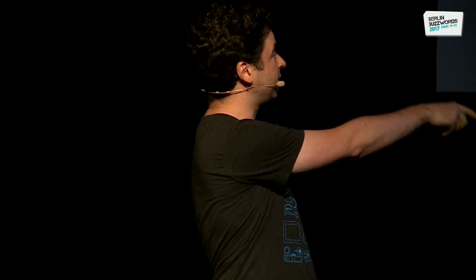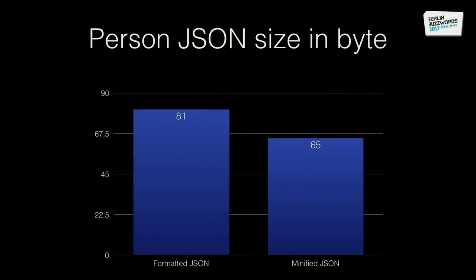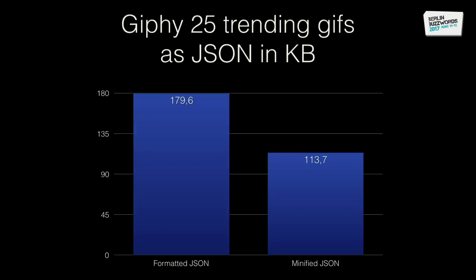If you look at this: minified JSON is 65 bytes and formatted JSON is 81 bytes. And for the real-life Giphy example — this is in kilobytes — I have 113 kilobytes minified, and formatted would be almost 180 kilobytes. So 1.5× more data just to make it human readable.